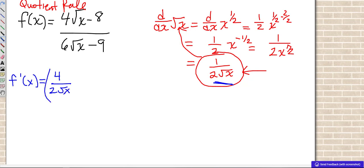The derivative of 8, of course, is a constant, which is 0. And then the quotient rule says, then leave the bottom alone, 6 square root of x minus 9. And then minus, leave the top alone, 4 square root of x minus 8.